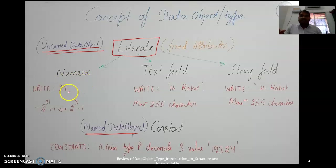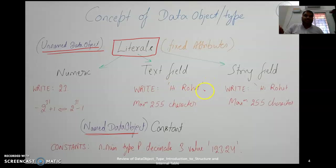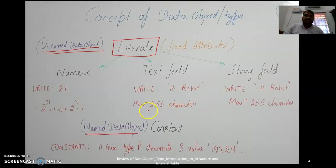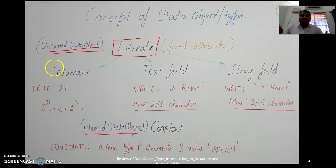For numeric literals, writing 23 puts it on the screen. Text fields are like 'Hi Rohit.' written with apostrophes. String fields use back-apostrophes, where 'Hi Rohit ' with a trailing space is allowed — the space is considered. In text fields, the space is not considered. Both text fields and string fields have a maximum of 255 characters. So literals are of three types: numeric, text fields, and string fields.